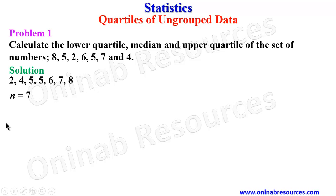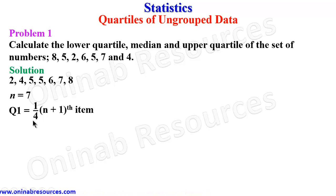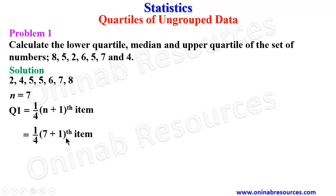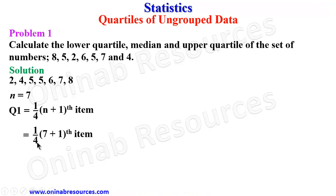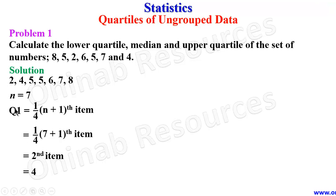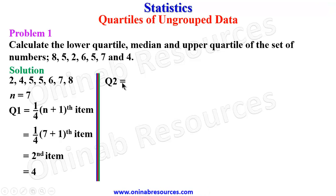To get our lower quartile Q1, we use the formula 1/4 × (n+1) item. This gives us 1/4 × (7+1) = 8 ÷ 4 = 2, so we look for the second item. The second item is 4, so Q1 equals 4.